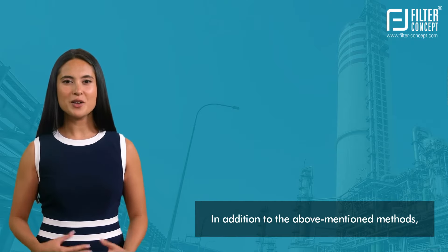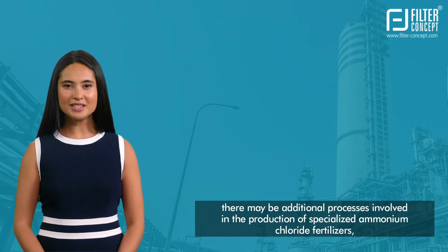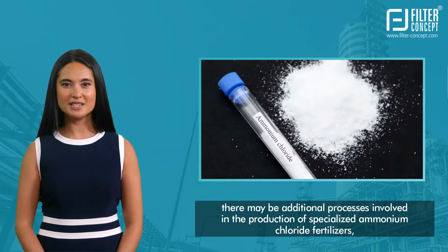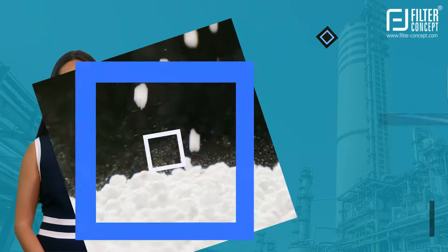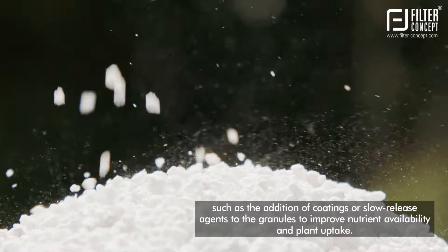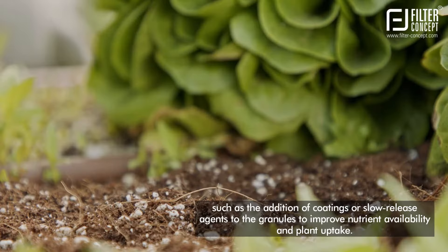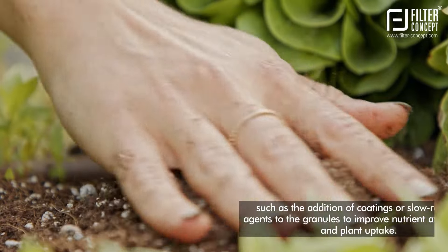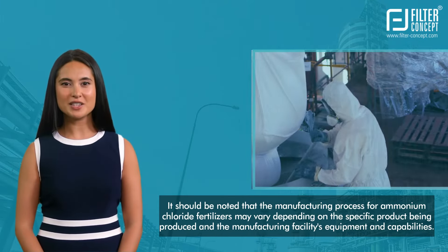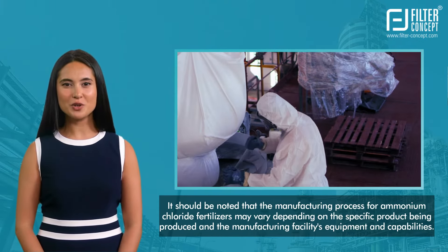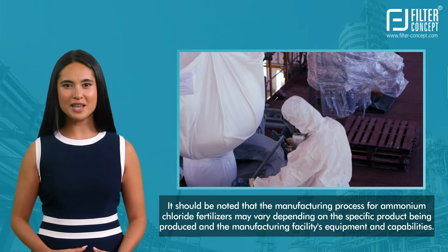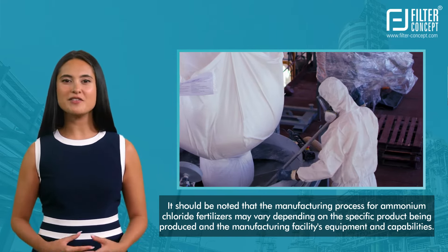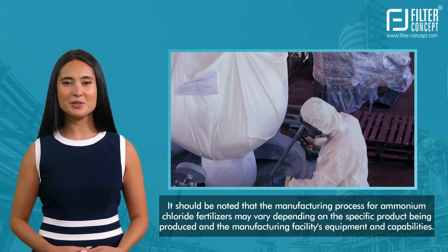In addition to the above-mentioned methods, there may be additional processes involved in the production of specialized ammonium chloride fertilizers, such as the addition of coatings or slow-release agents to the granules to improve nutrient availability and plant uptake. The manufacturing process may vary depending on the specific product being produced and the facility's equipment and capabilities.